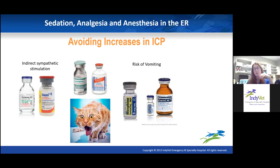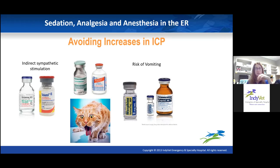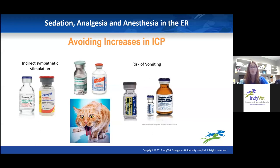Some opioids, depending on route of administration, can contribute to a higher risk of vomiting. Morphine and hydromorphone given intramuscularly carry a high risk of vomiting. And counterintuitively, low doses actually induce a higher risk of vomiting — it has to do with receptor saturation and where it targets the brain. So giving a low dose of morphine isn't the safer choice if you have something else. Giving those medications intravenously does reduce the risk; you just have to give morphine pretty slow IV due to histamine release risk. If I have another full agonist opioid option, I'd choose that over these two.